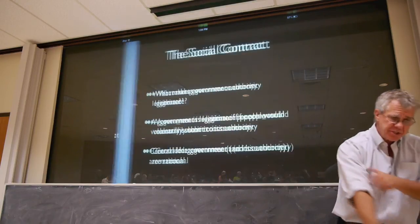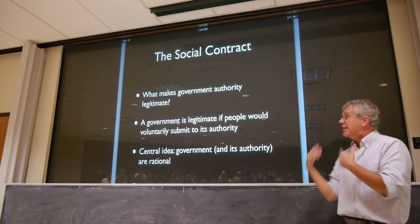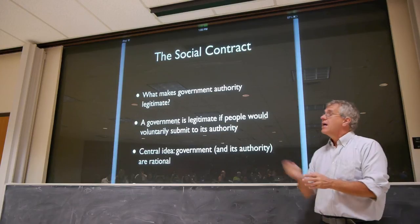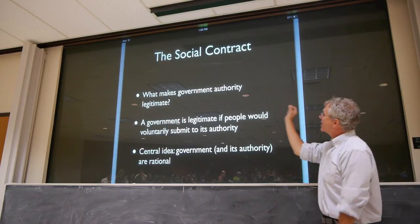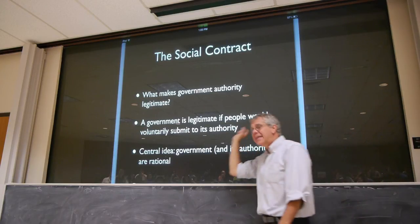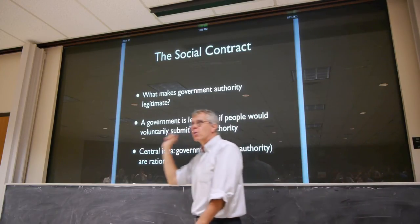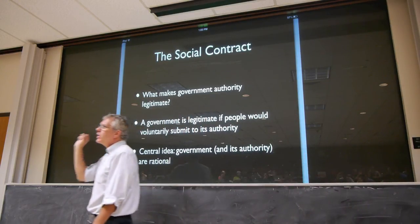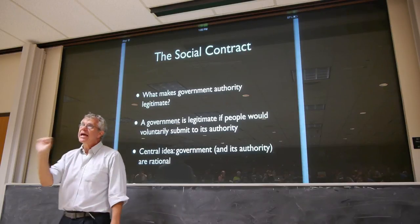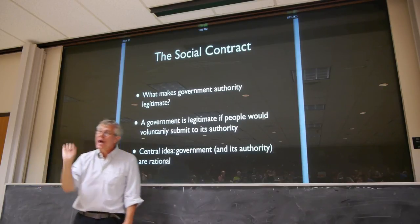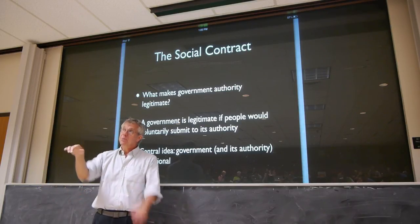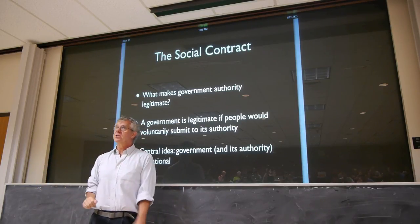Here's the basic idea behind what is known as social contract theory. The thought is that what makes government authority legitimate is that we would voluntarily and rationally choose to put ourselves under its authority.